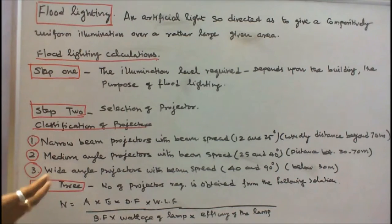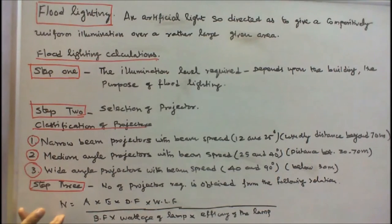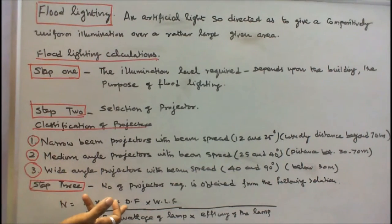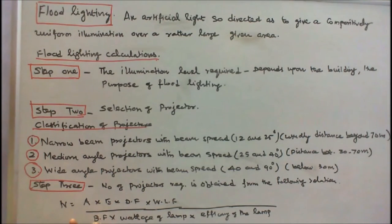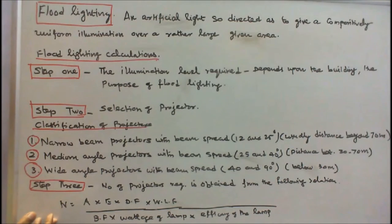Step 3 — Calculate the number of projectors required using the following formula: N (number of projectors) = [Area to be illuminated (A) × Illumination (E) × Depreciation Factor × Waste Light Factor] divided by [Beam Factor × Wattage of lamp × Luminous efficacy of the lamp]. That is the formula for computing the number of projectors.